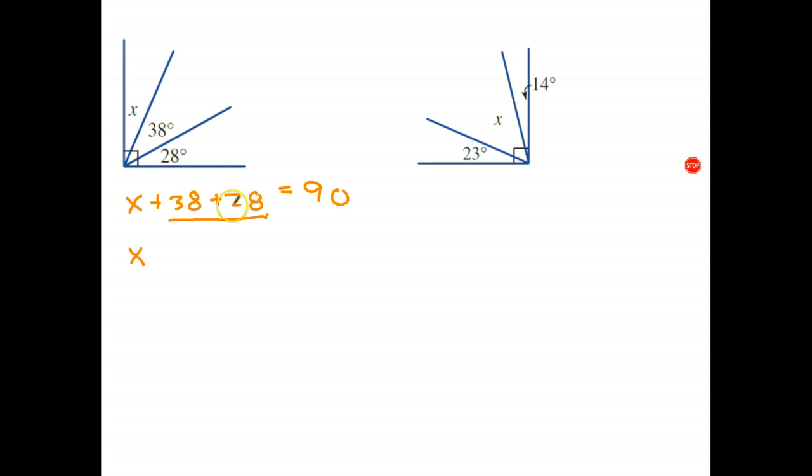Okay, 38 plus 28 is 66, so I add those two together, and I know that that equals 90 degrees. Subtract 66 from both sides, and plus 66 minus 66 cancels out. And 90 takes 66 is 24. And that's 24.